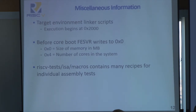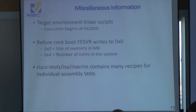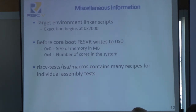Some miscellaneous information: in accordance with the target environment linker scripts, all test execution will begin at 0x2000. Furthermore, this is very relevant for multi-core tests — before the core boots, the front-end server will write two pieces of data to memory. At the zeroth memory location it will write the size of the memory in megabytes, and at the fourth memory location it will write the number of cores in the system. Finally, the RISC-V test slash ISA macros contains many recipes for constructing individual assembly tests, if you do not wish to write them all out yourself.